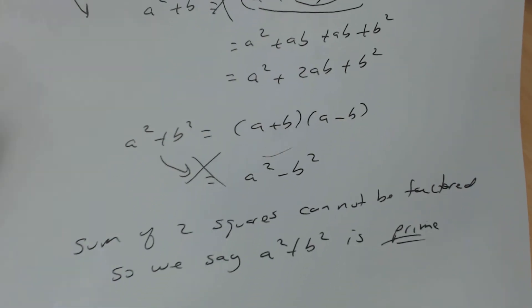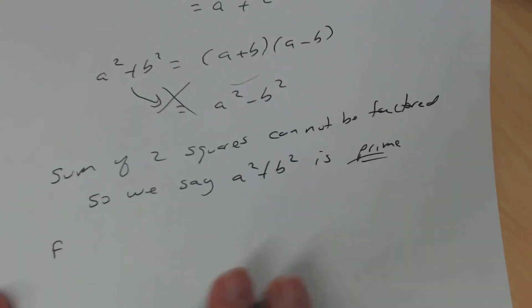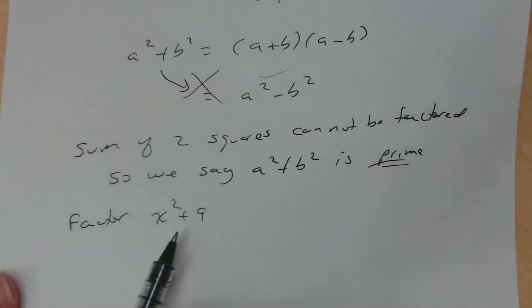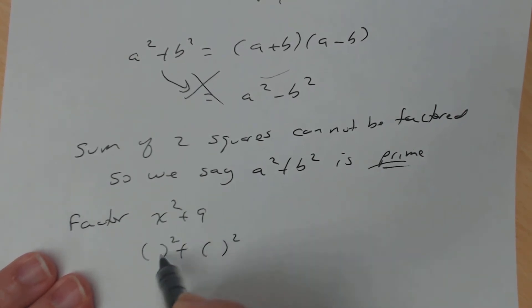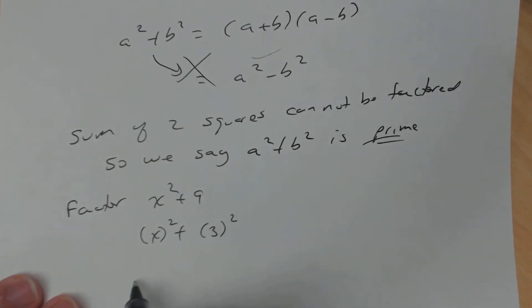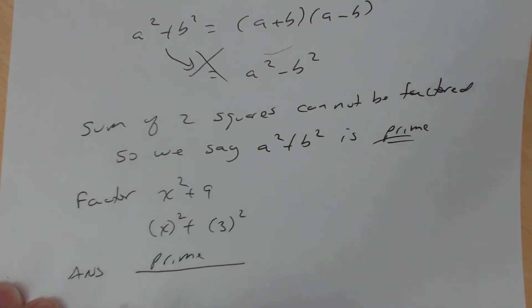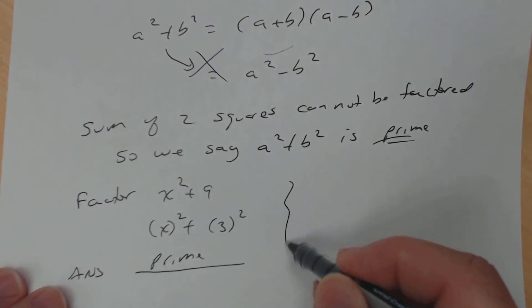For example, if you're asked to factor x² + 9, notice that is the sum of two squares because you can write it as x² + 3². Since it's the sum of two squares, the answer is just prime, because this polynomial cannot be factored.